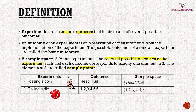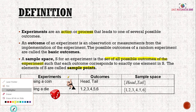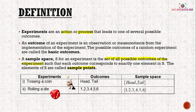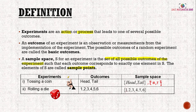Let's look at a table to understand these terms more easily. An example experiment is tossing a coin. When we toss a coin, the outcome is whether we get head or tail. The sample space is written in curly brackets: {H, T}. When we roll a die, we have 6 possible outcomes: 1, 2, 3, 4, 5, and 6, so the sample space is {1, 2, 3, 4, 5, 6}. Each element in the sample space is called a sample point.